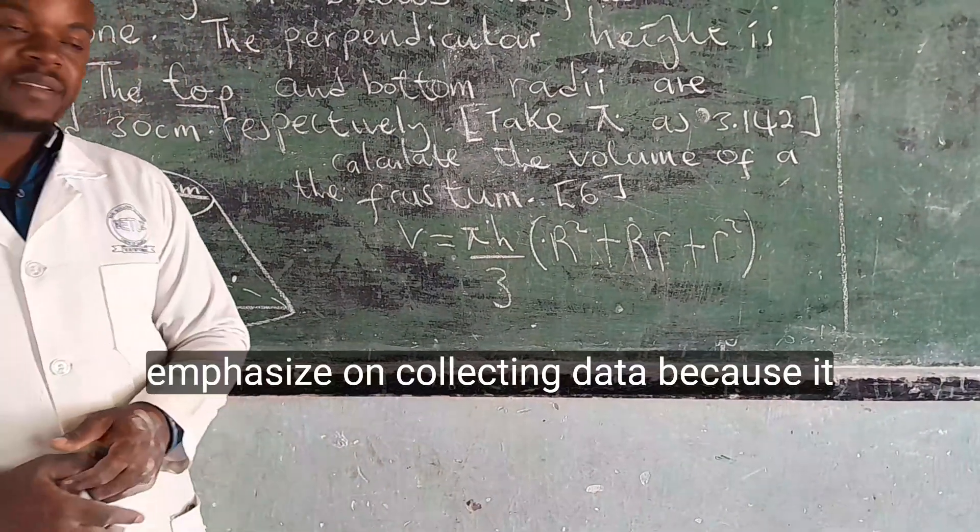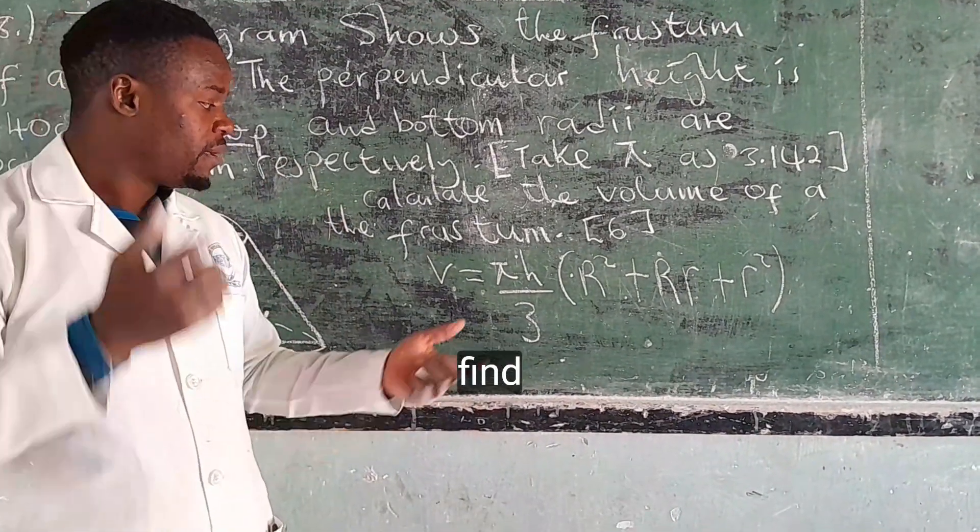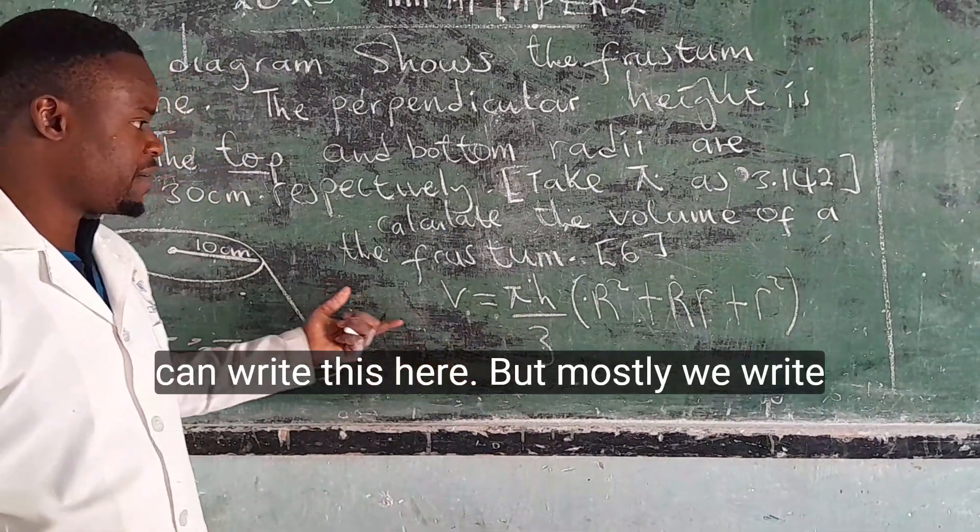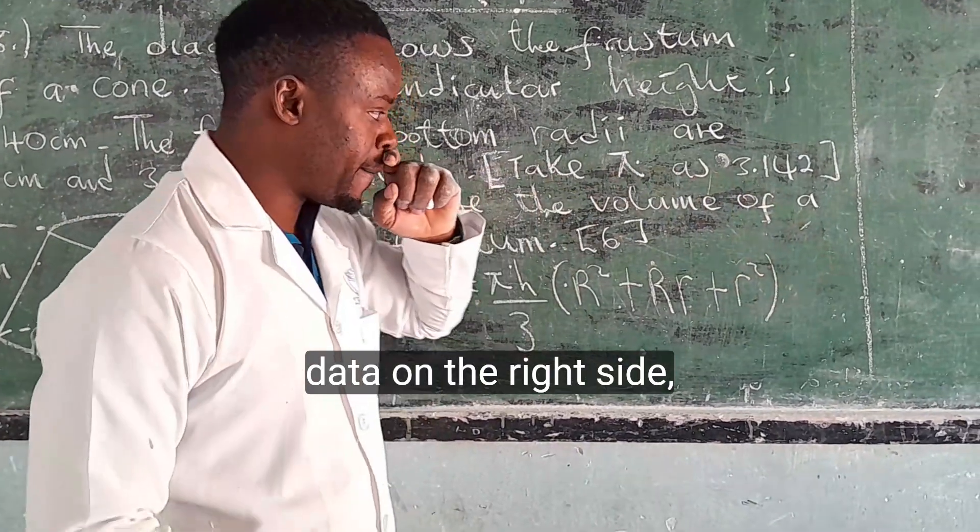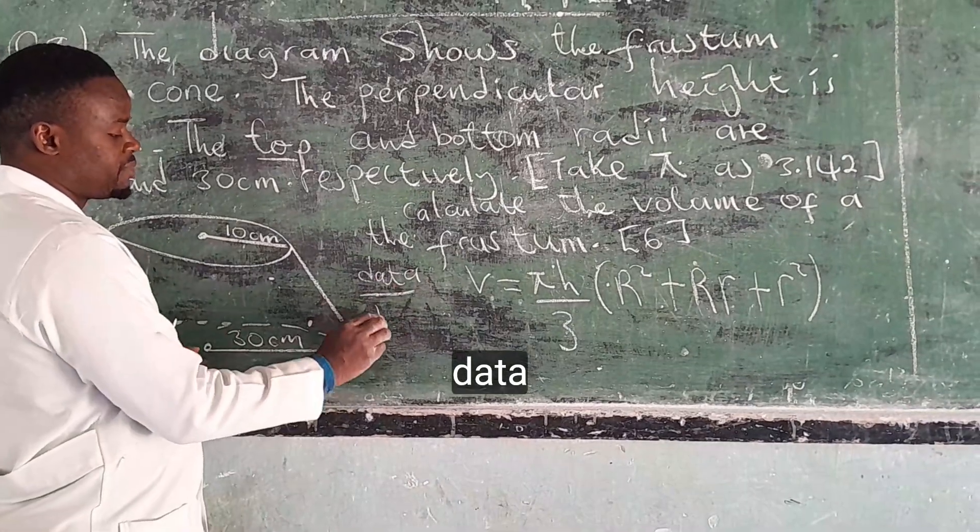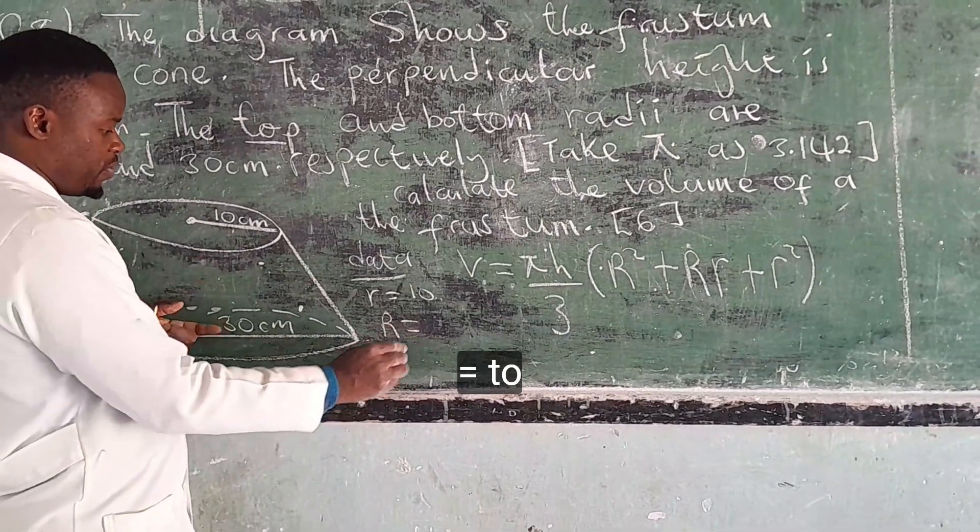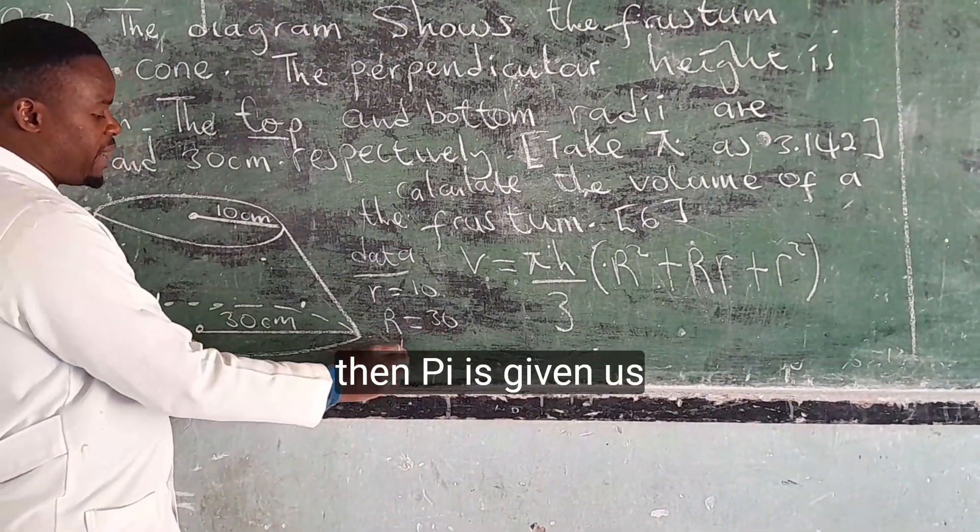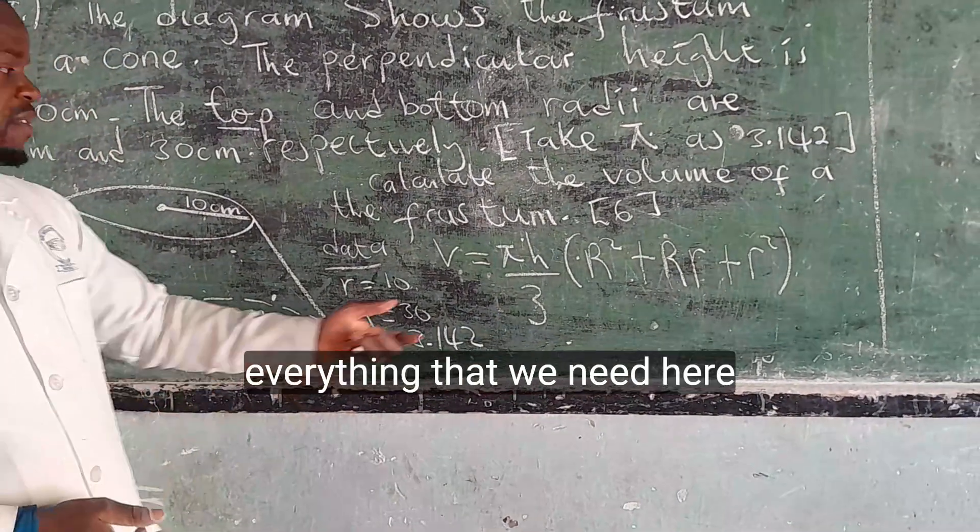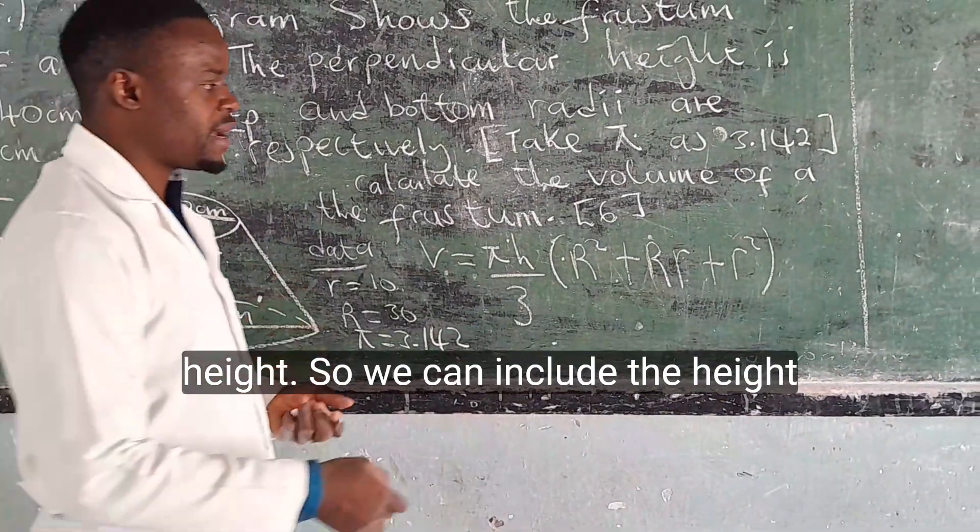I always emphasize collecting data because it makes work much easier. So for it to find the volume pretty easily, you have to collect data. I can write this here, but mostly we write data on the right side. I'll write it here. So the data: small r is equal to 10, big R is equal to 30, then pi is given as 3.142. We have everything except one thing, that is height. So we can include the height here. Height is equal to 40 cm.